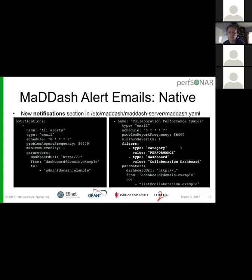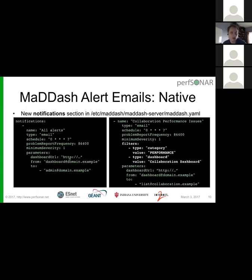The way you set up native notifications: if you've used MADDash before, the main configuration file is maddash.yaml. You can optionally add a new notification section. This notification section is a list, so you can define multiple notifications. If you want to send different information to different people, you have the ability to do that. The basic configuration has a name — essentially the subject of your email — type email, which is the only type MADDash currently supports. There's a schedule option using a cron-like string — what's shown there runs every hour at the top of the hour — and a problem report frequency option. The schedule runs every hour, but you don't necessarily want to be emailed every hour about the same thing; this setting prevents sending the same problem more than once a day (86,400 seconds).